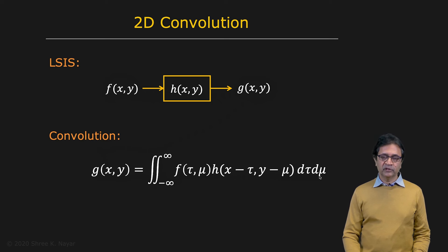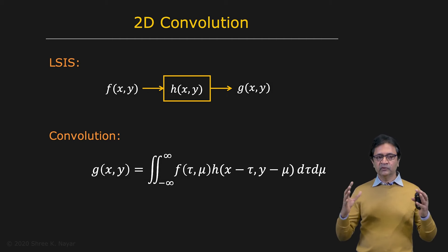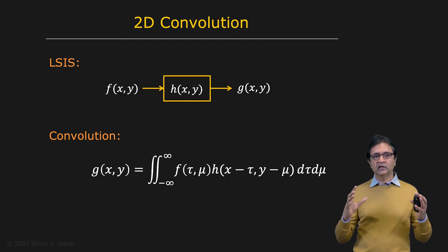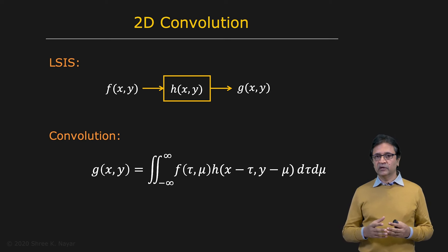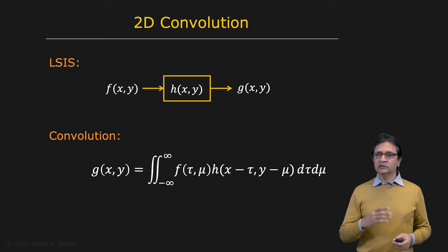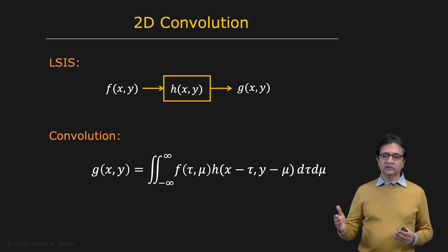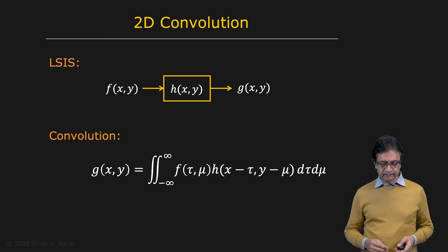Now, it doesn't stop at 2. Let's say you're looking at medical images where you have volumetric data, such as ultrasound images. In this case, you may want to apply operations to this three-dimensional data. So the definition of convolution is easily extensible to higher dimensions — three or more dimensions as well.